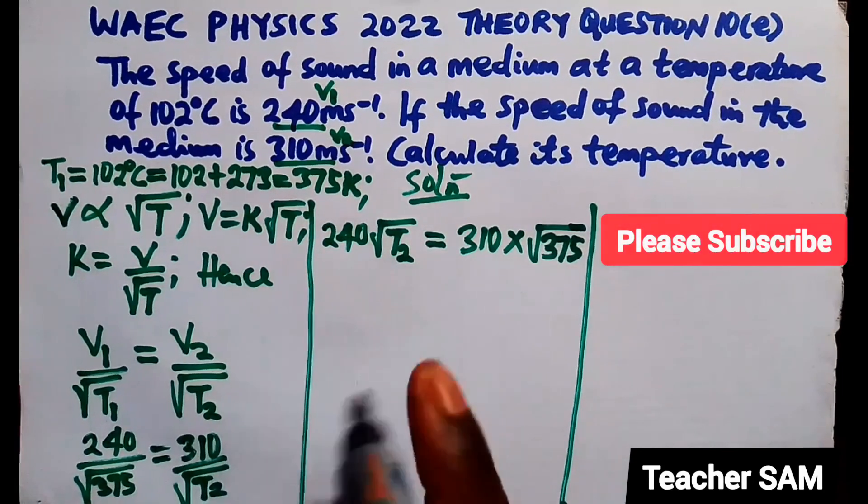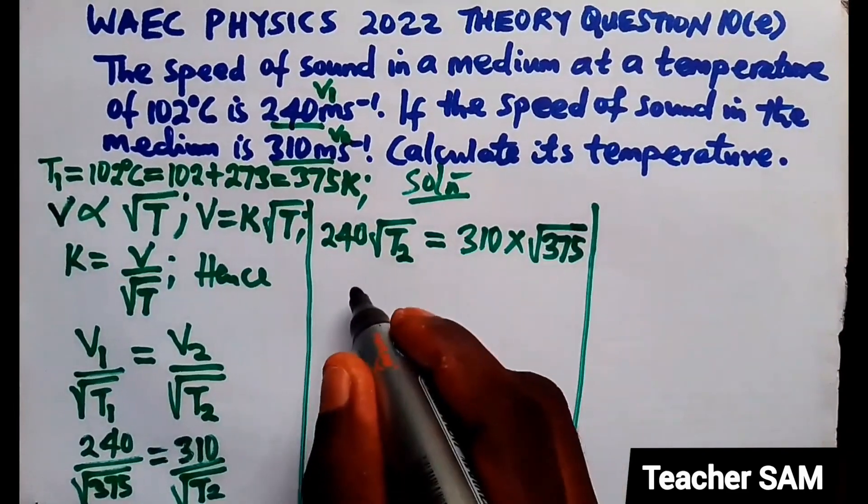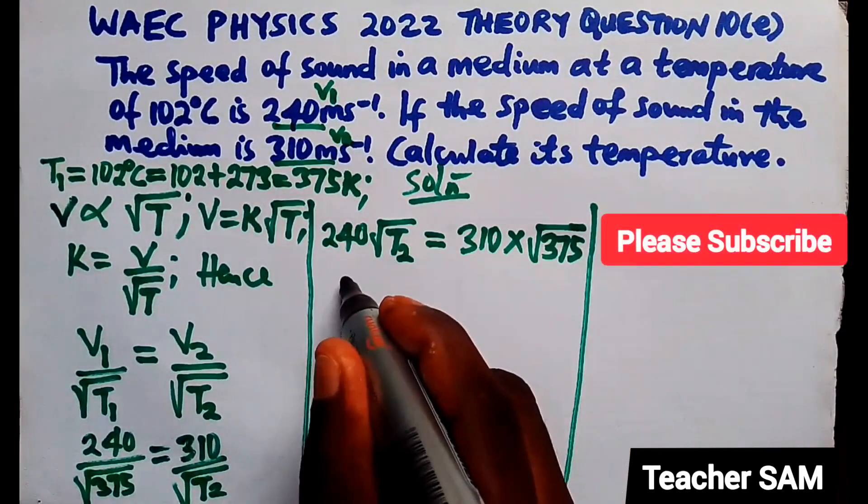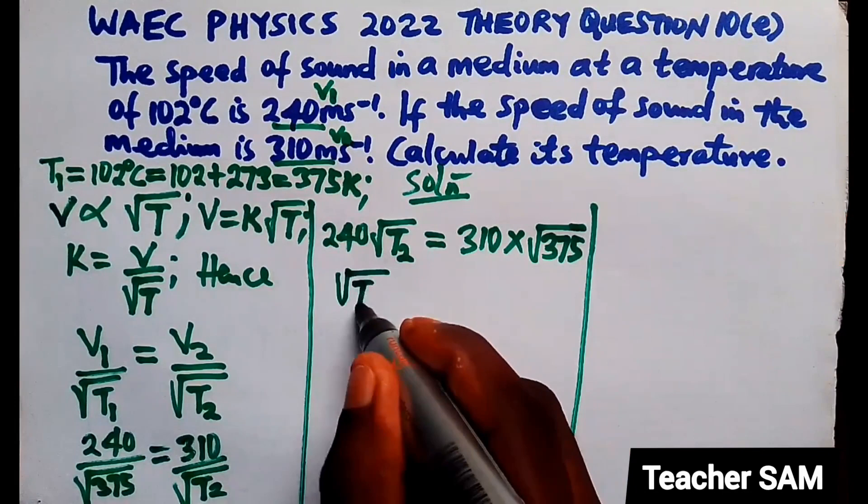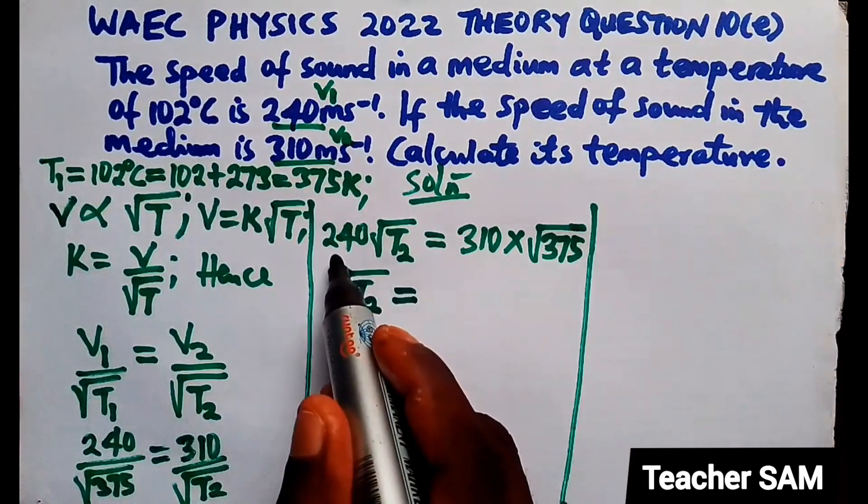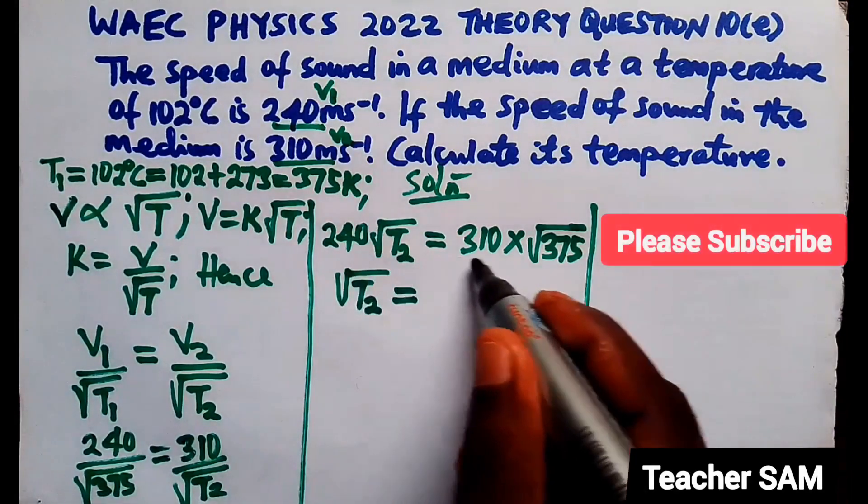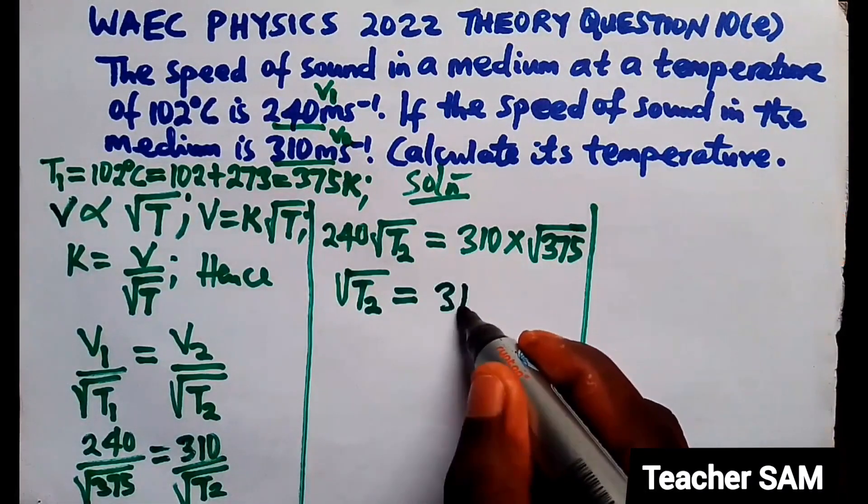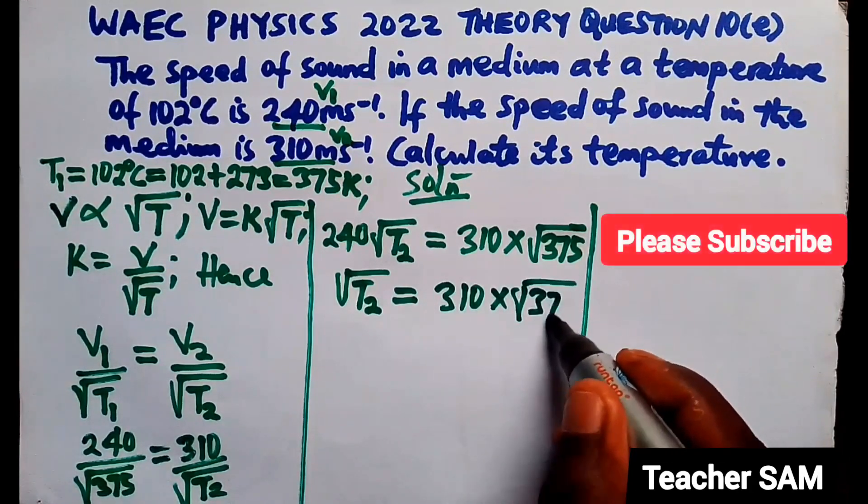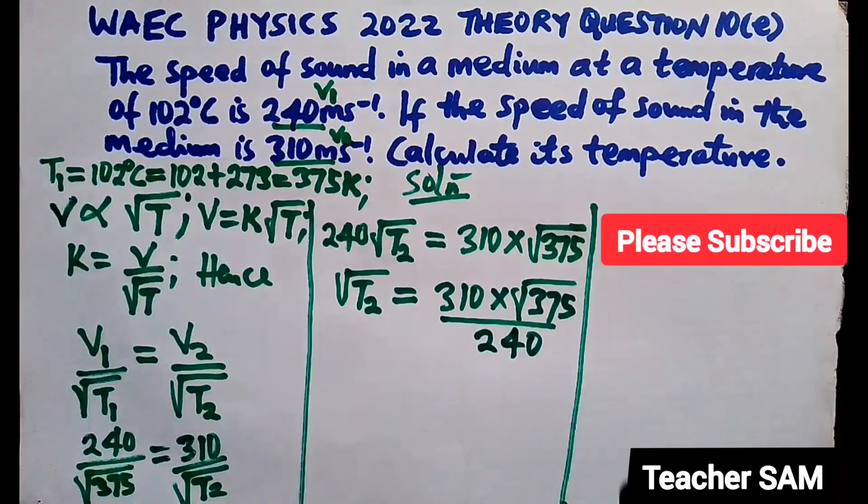Now, by the time we go ahead with this, we will be having that. Let's just make root of T2 to be subject. That means we are going to divide both sides by 240. So, if we divide here by 240, 240 will be out. Divide here by 240. So, 310 times root of 375 divided by 240.